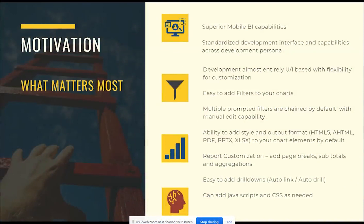The ability to add filters natively to your charts — the ease of adding filters — is key, and the out-of-the-box nature is critical. These were all available in App Studio and previous versions, but now it's just a lot easier. When filters need to be chained to each other, when there is some relationship from one filter to the next and you need some manual edit capability, that experience of building chained filters with one dimension talking to another dimension is just a lot easier now. The ability to add style and output format — whether HTML5, HTML, or PDF — a lot of these were available before, but now everything is easier by default.